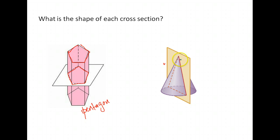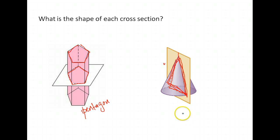Finally, a cone. We're taking a cross-section of a cone, slicing right down the middle. So if we were to cut this and then pull it open and take a look, what shape would we have? Where we sliced it looks like a triangle.